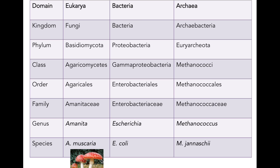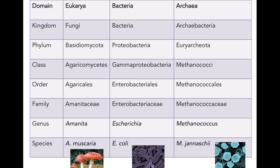Amanita muscaria is the common mushroom with the red cap and white spots — the Super Mario mushroom or smurf house mushroom. Interestingly, if you eat too much of it, it'll kill you — it's poisonous. E. coli is a species of bacterium found in your gut, or colon — hence E. coli. And Methanococcus jannaschii is a species of archaean which produces methane, hence the name Methanococcus.